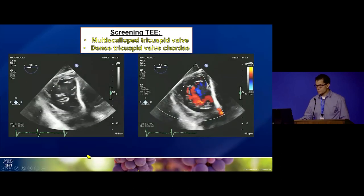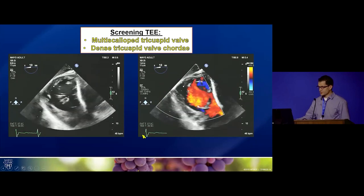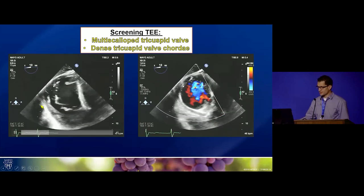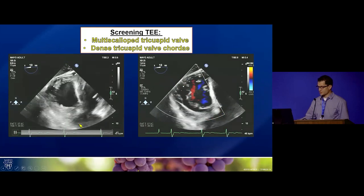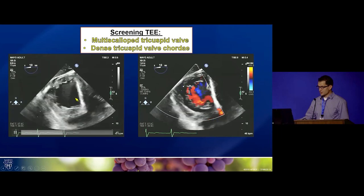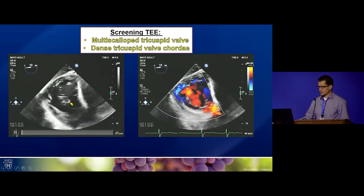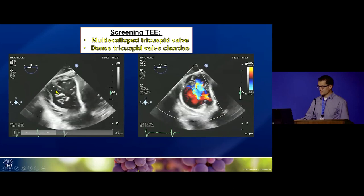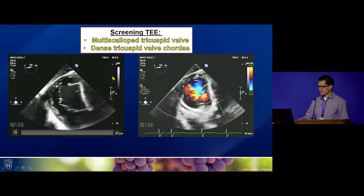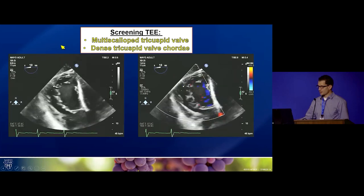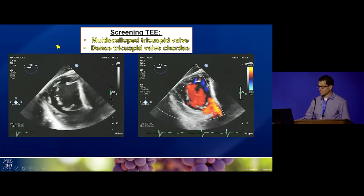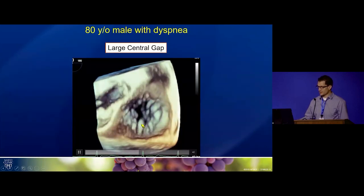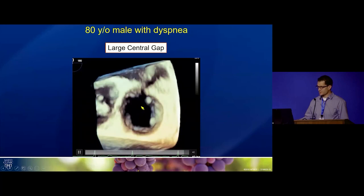Another workhorse view for transcatheter edge-to-edge repair is the transgastric view of the tricuspid valve, obtained by pushing the transducer into the stomach. What you see is a large gap going all the way from anterior to posterior, with a broad jet of TR, a multi-scalloped tricuspid valve, and some prominent cords — all features that were considered less than optimal for edge-to-edge repair.